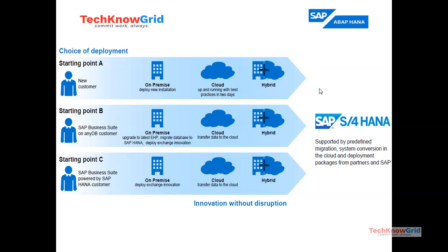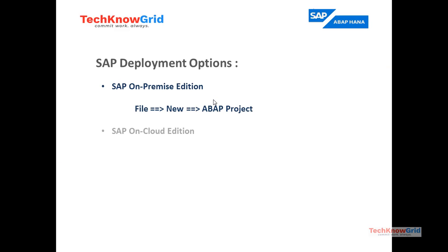We have three different types of customers: SAP on-premise customers, SAP on-cloud customers, and SAP hybrid customers. SAP hybrid customers use a combination of on-premise and on-cloud systems — some operations run on-premise and critical parts on the cloud. I have personally worked with both on-premise and SAP cloud customers.